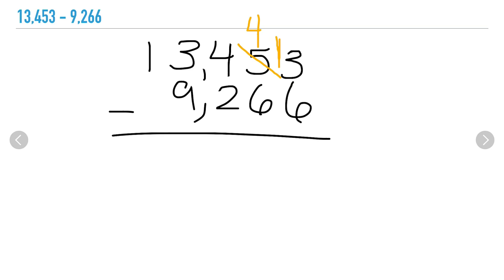I have 7 ones left over. Now let's take away 4 minus 6 — I can't do that either, so I need to regroup from my hundreds, which means I'm borrowing 100 from 400. That leaves me with 3 hundreds, and I can then give that 100 back to my tens place, making 14 tens. Now I can take away 14 minus 6.